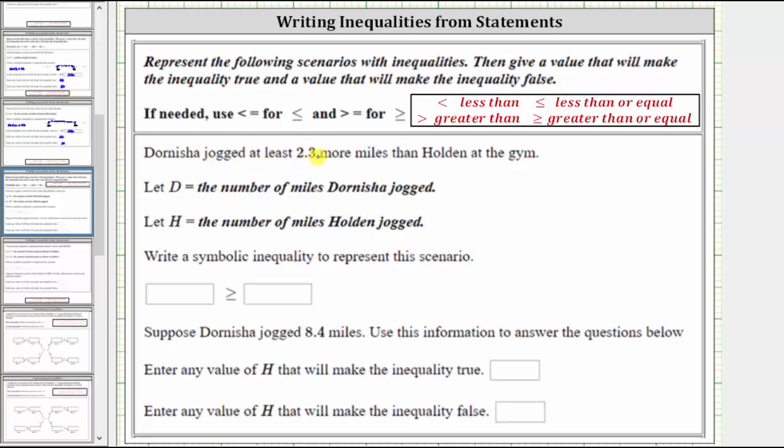Because Dornisha jogged at least 2.3 more miles than Holden, she could have jogged exactly 2.3 more miles than Holden or more than 2.3 more miles than Holden.